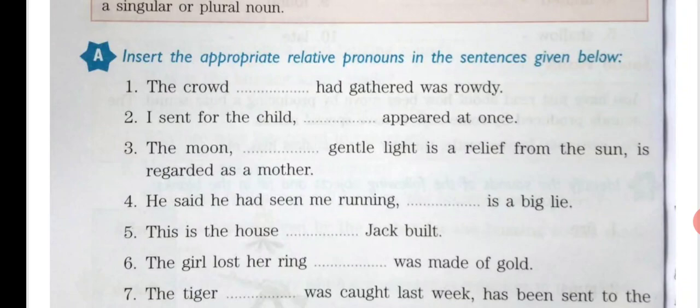First exercise: insert the appropriate relative pronouns in the sentences given below. First: 'The crowd ___ had gathered was rowdy' — 'which' will come here, as 'crowd' is a non-living thing. Next: 'I sent for the child ___ appeared at once' — 'who' will come, as 'child' is a single person.